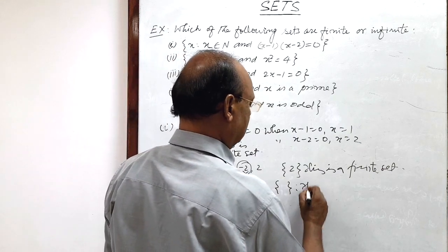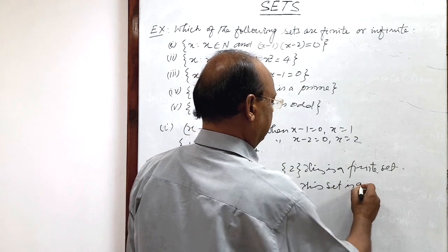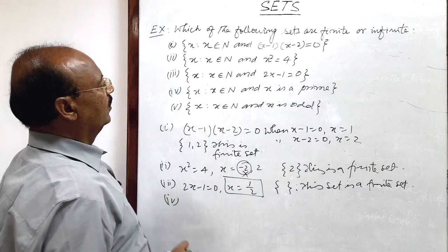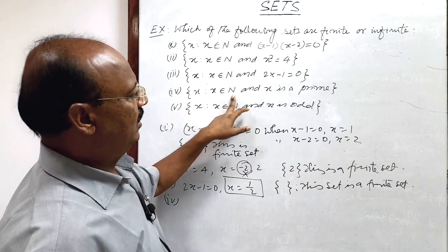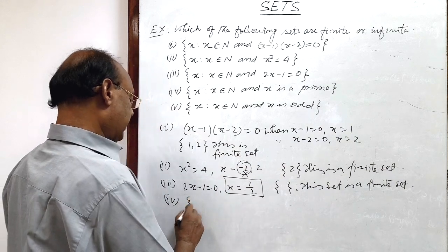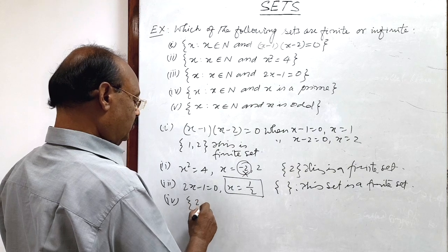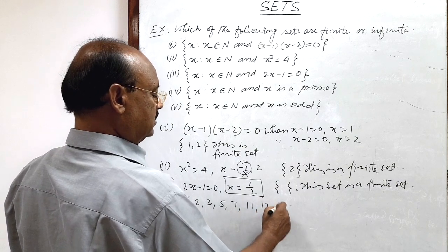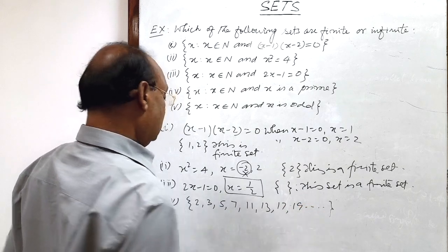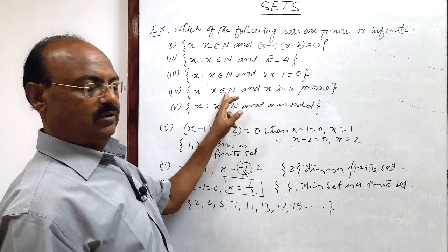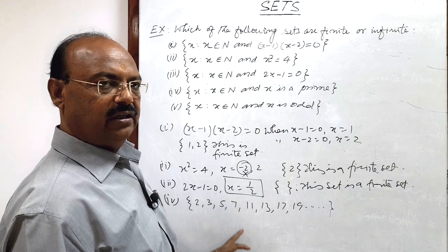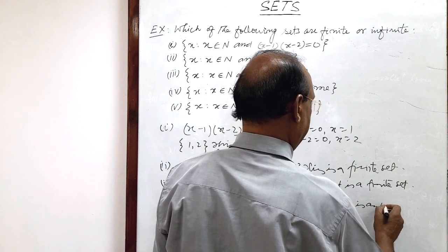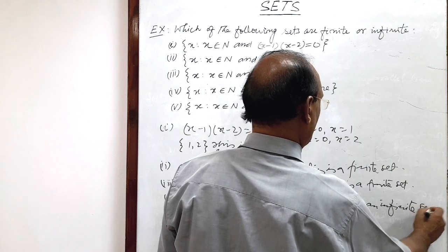Fourth: the set of x such that x belongs to natural numbers and x is a prime number. Prime numbers start from 2, 3, 5, 7, 11, 13, 17, 19, and so on. There are infinitely many prime numbers belonging to the set of natural numbers, so this is an infinite set.